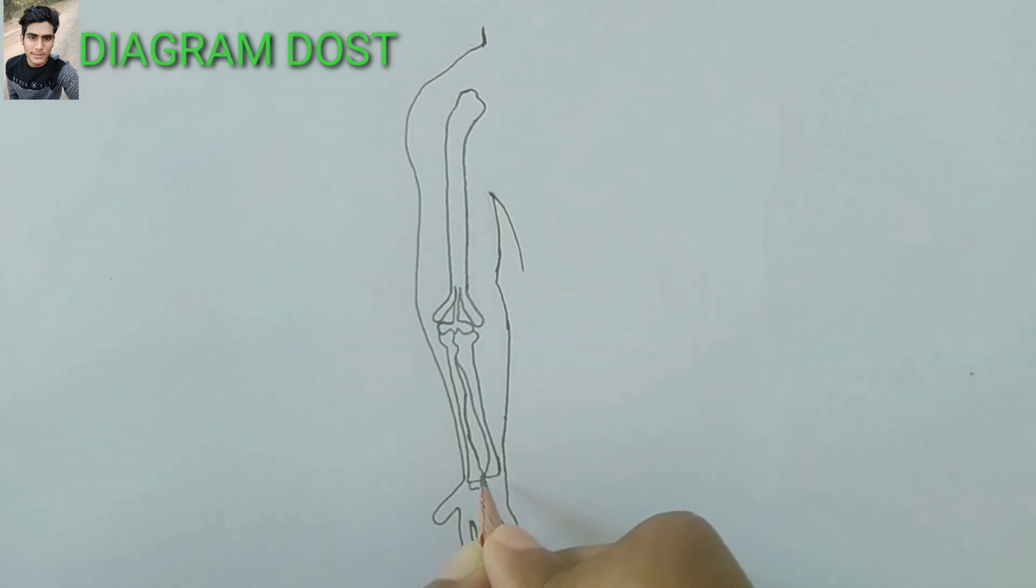Now I am drawing carpal bone. They are eight in number. They are also known as wrist bone.